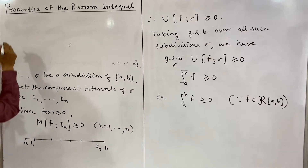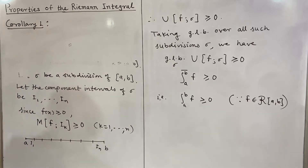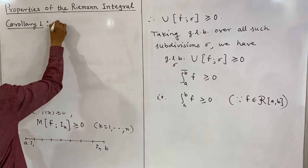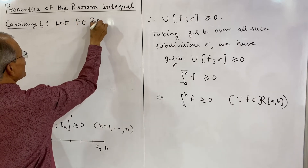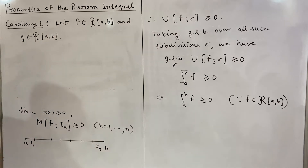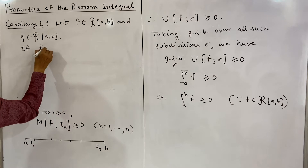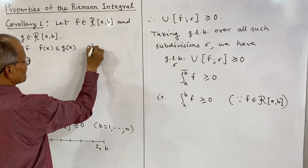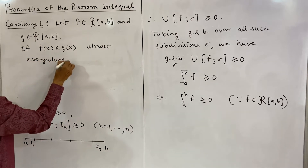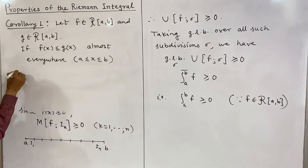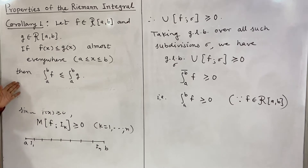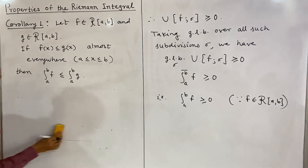I shall write the statement of two corollaries we shall prove. First corollary: Let f and g be Riemann integrable functions. If f(x) ≤ g(x) almost everywhere in the interval a to b, then the integral of f from a to b is less than or equal to the integral of g from a to b. We make use of this lemma to prove this corollary.